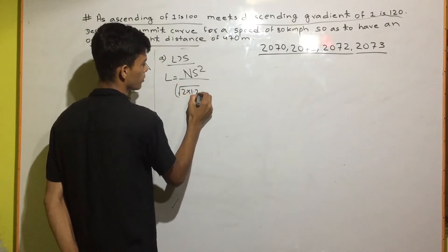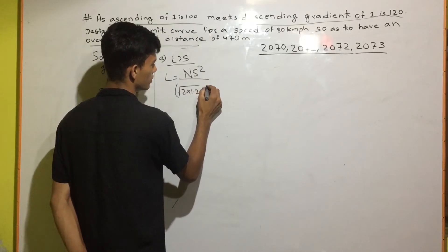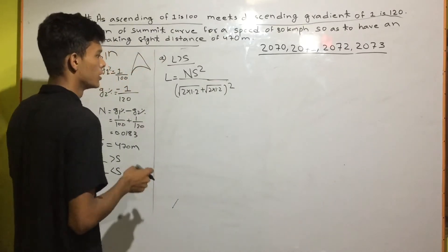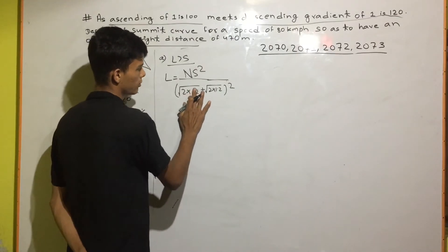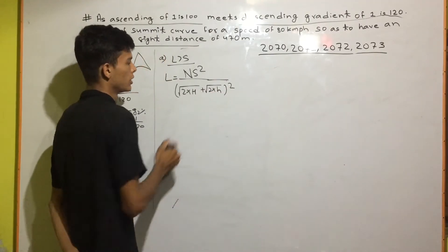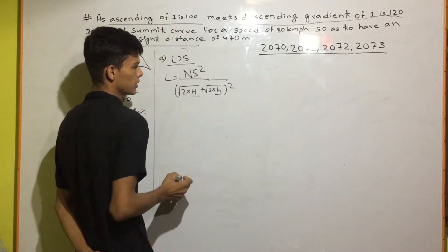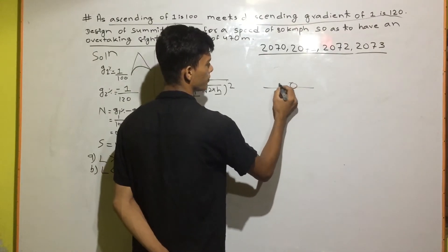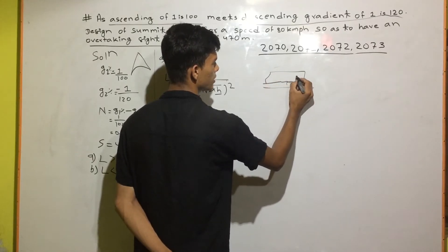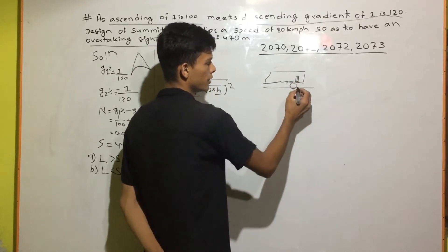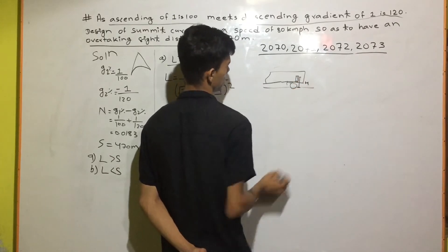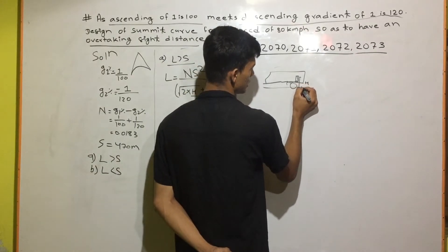So: 1 by 2 plus root under 2, into 1 by 2 plus root under 2, into 1 by 2, squared. This represents small H — the height of the vehicle driver. You can see the road, and the driver has a stopping sight distance. This small H is where you see the vehicle.